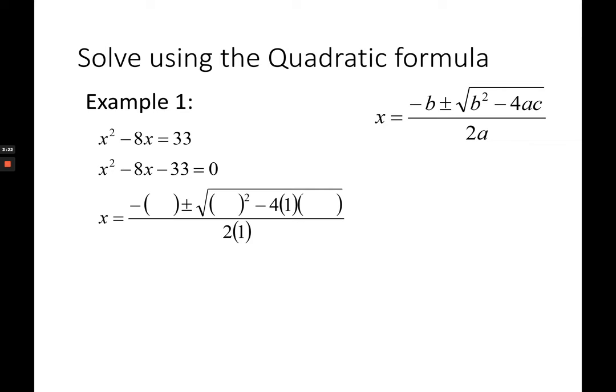The first parentheses will actually become double minus because negative from the formula and B is actually negative 8. And then the second parentheses, which is inside the square root, is also negative 8, the value of B. And then the last unfilled parentheses is negative 33. You watch out for your sign. The C is negative 33, so you copy as well as the sign.